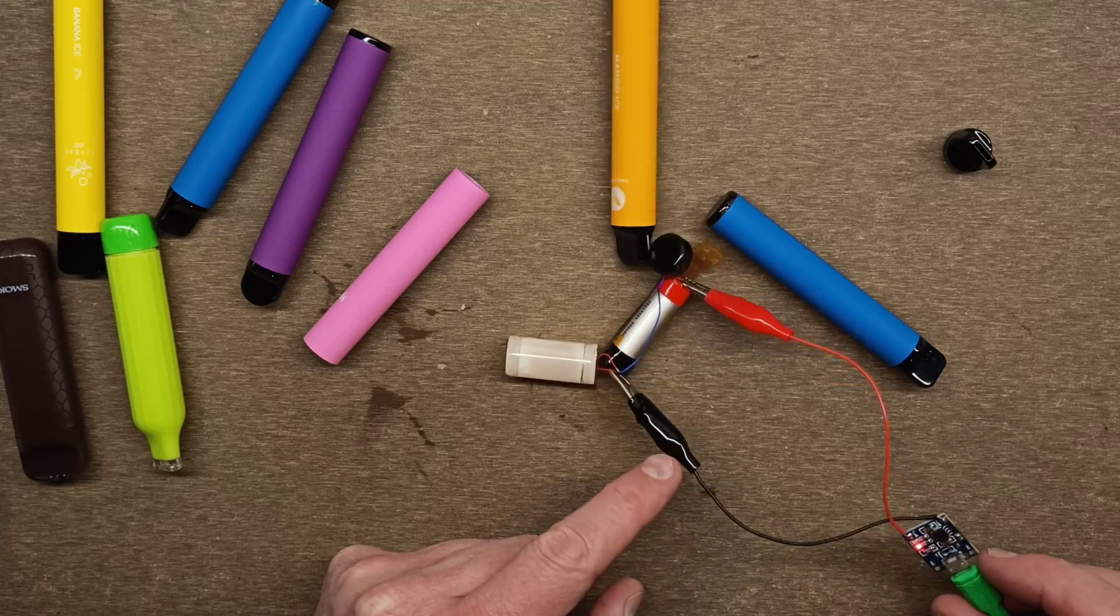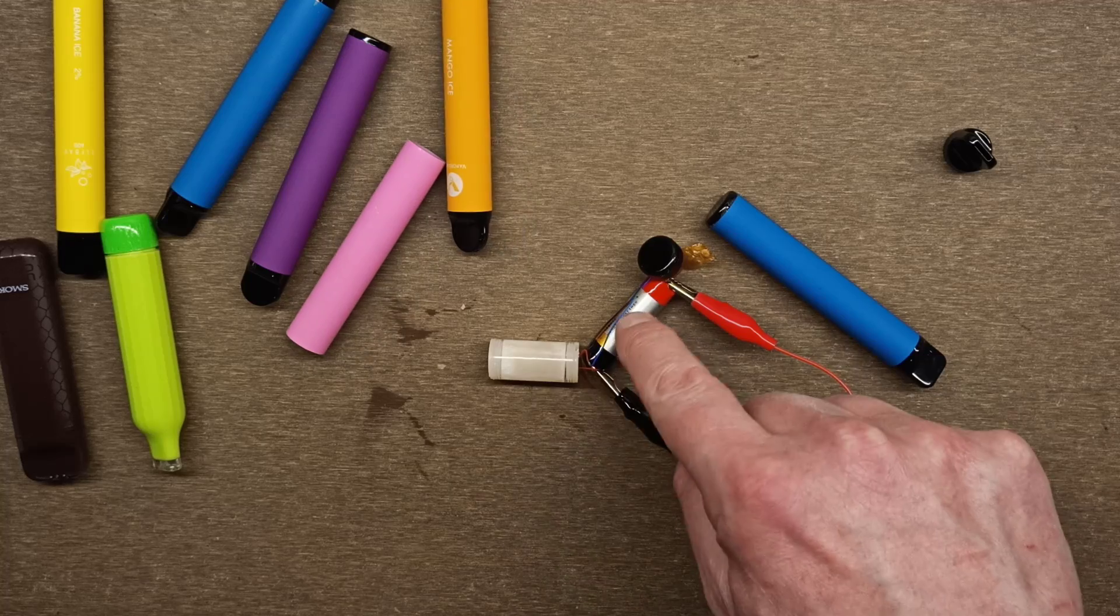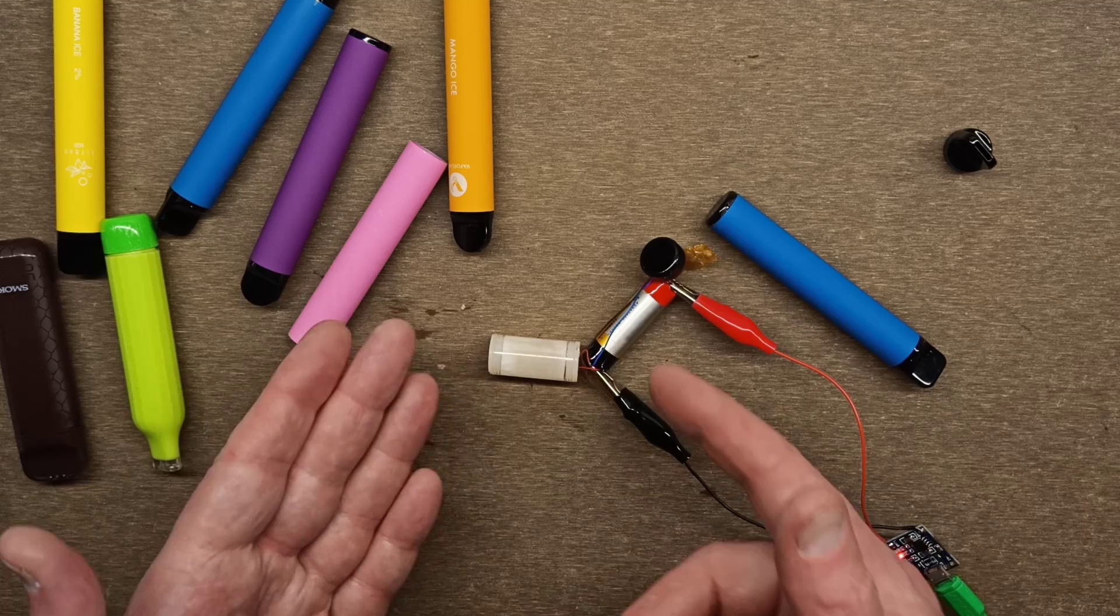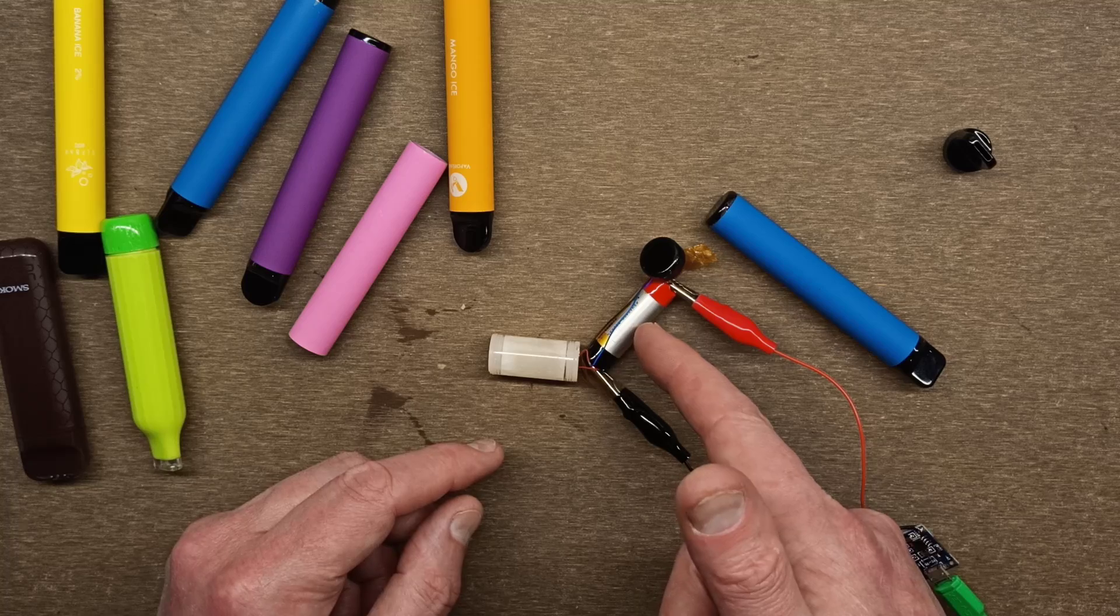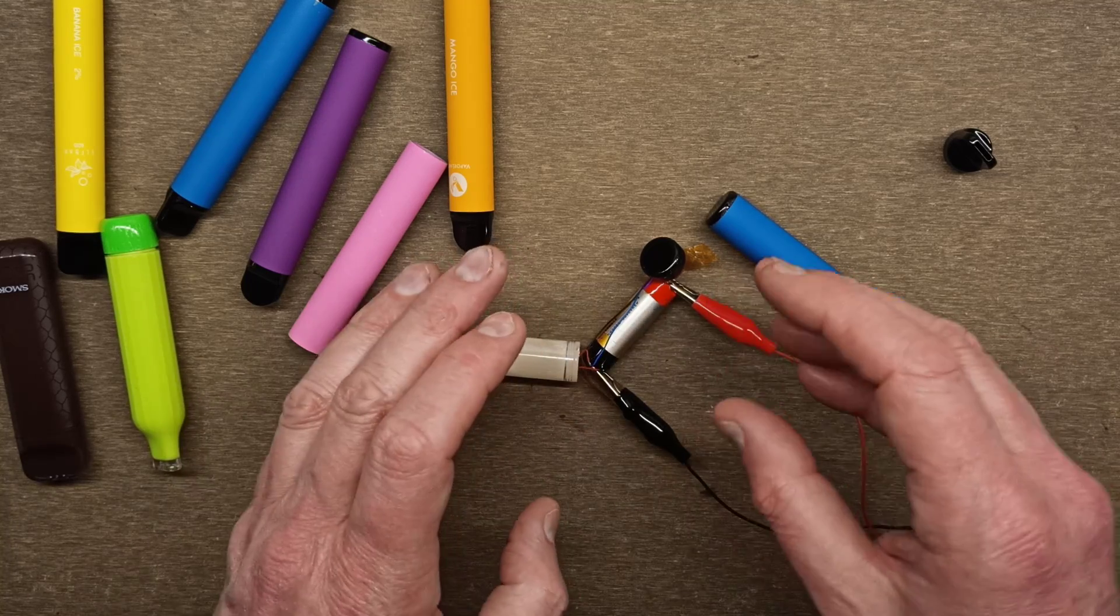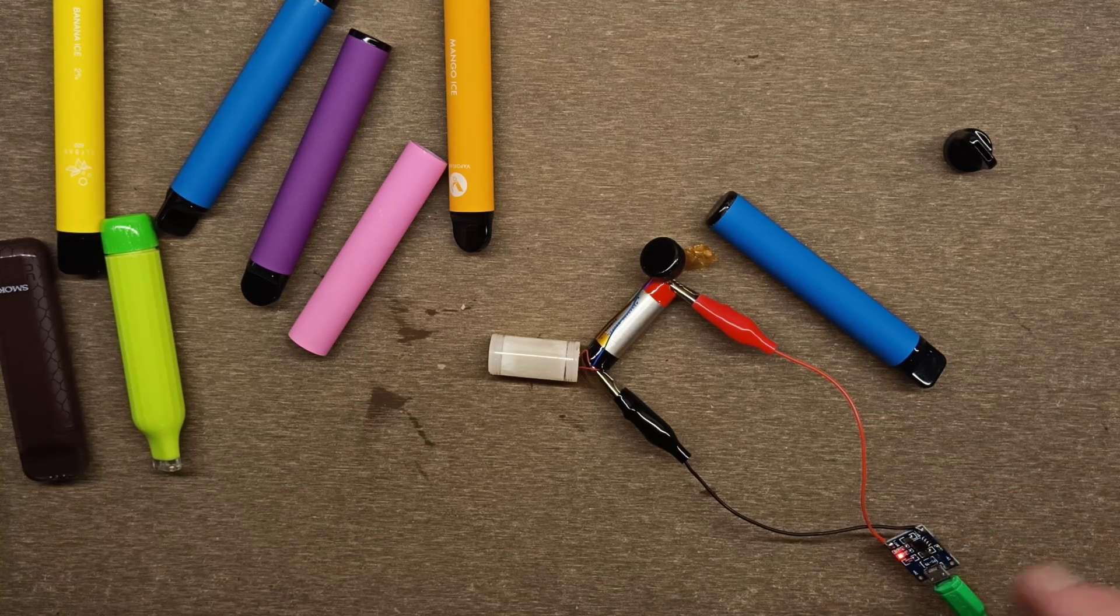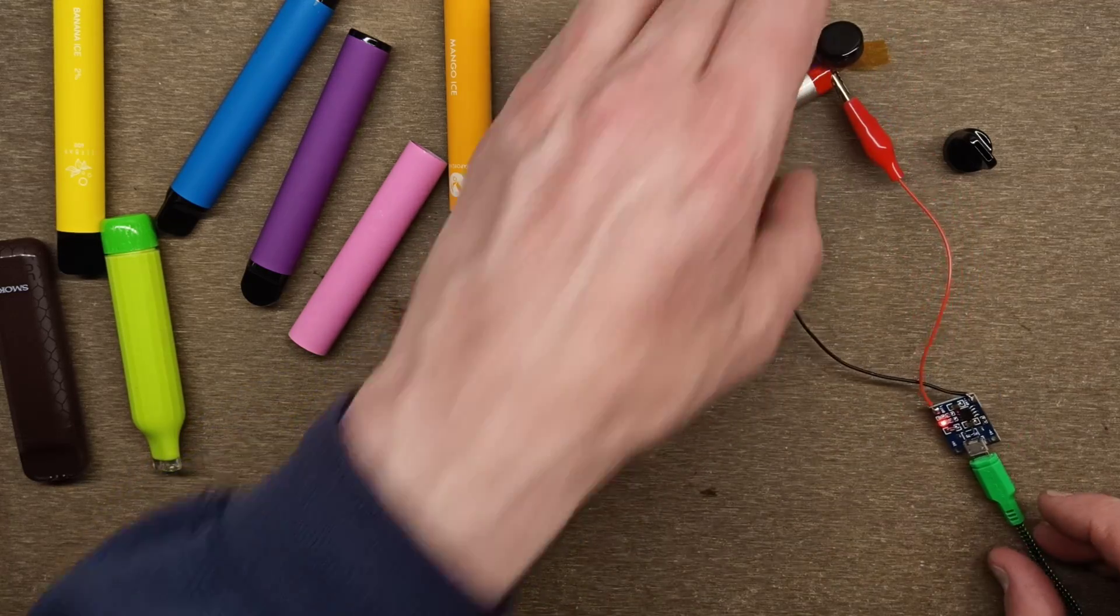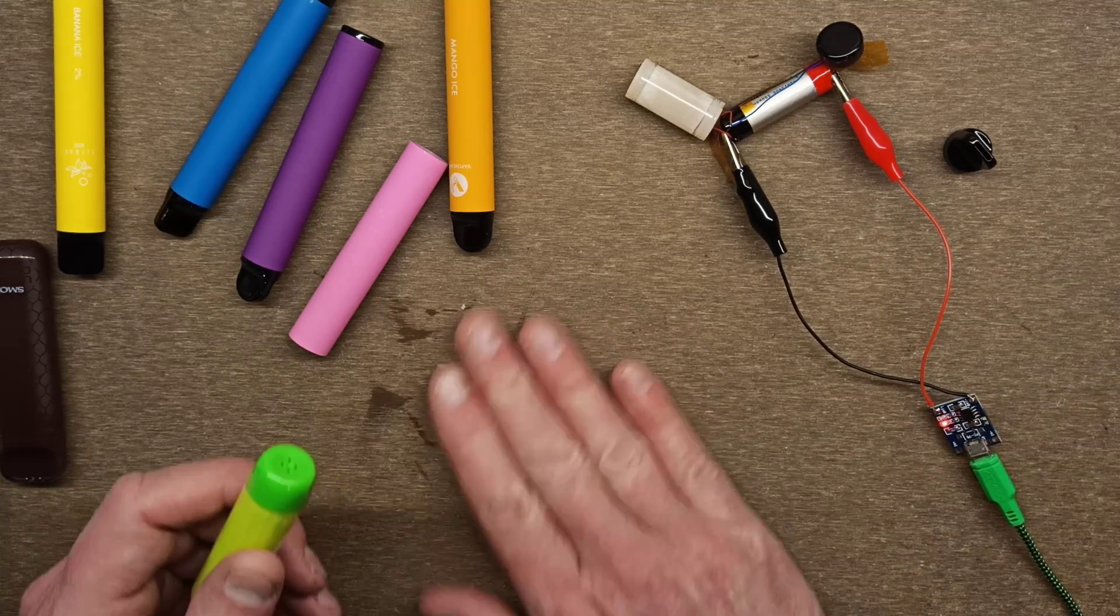If you had a solar rechargeable light that you wanted to put one of these cells in, or you wanted to use it in a head torch, keep in mind that these by default don't come with the little protection circuit board. Make sure whatever device you use it in does have the charge regulation circuitry that will limit the current and stop it at 4.2 volts.